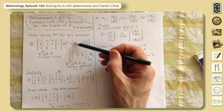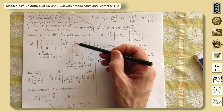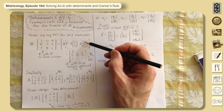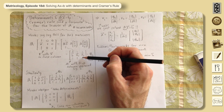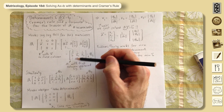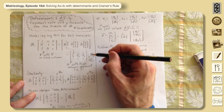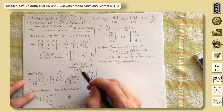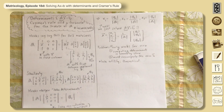The second column picks out: zero of the first column of A, one of the second column, zero of the third — so that's just the second column of A, which is a2. The third column gives a3. We call this resulting matrix B1 — it's A with the first column replaced by b from Ax = b.